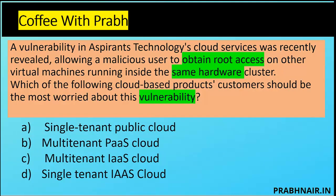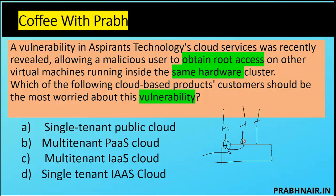Next coffee shot: a vulnerability in Aspirant Technology's cloud service was recently revealed, allowing a malicious user to obtain root access on other virtual machines running inside the same hardware cluster. Which of the following cloud-based product customers should be most worried about this? We have one hardware abstracted into machines provided to customers — so it's possible to attack the server and access from one tenant to another. TPM (Trusted Platform Module) is the most effective security control against such attacks.